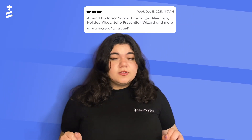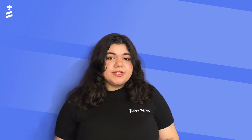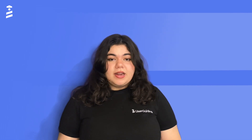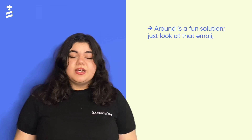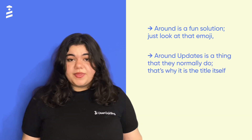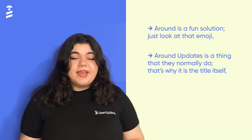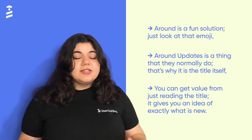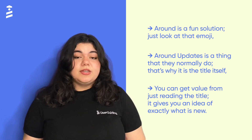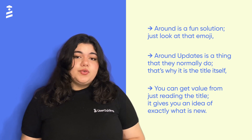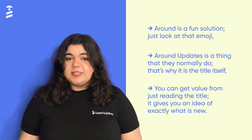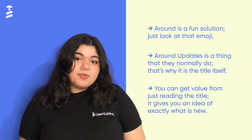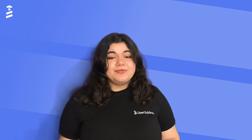Every time Around, the meeting app, does an update they send an email — and even just looking at the title I can tell that Around is a fun, nice product. Look at that emoji. And that Around does these updates often — it's what the title says: 'Around Updates.' They must name it that because they do it often, and I can get value just by looking at that subject line. This says a lot about Around — it gives users enough engagement and sympathy for the product to send one message straight: Around is doing their best, they are trying to improve their product and they care about users knowing.